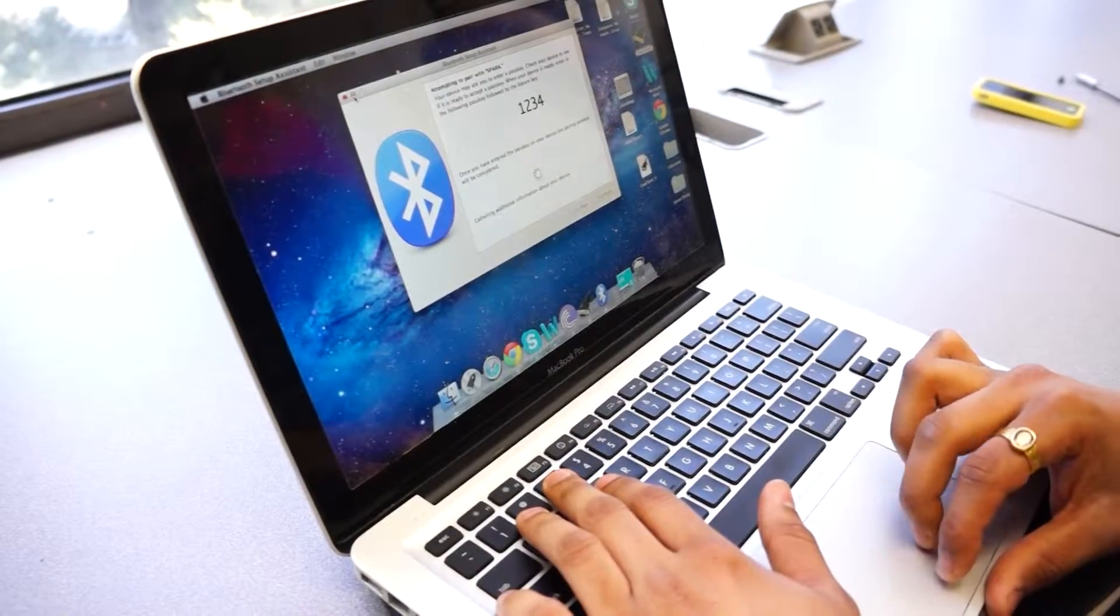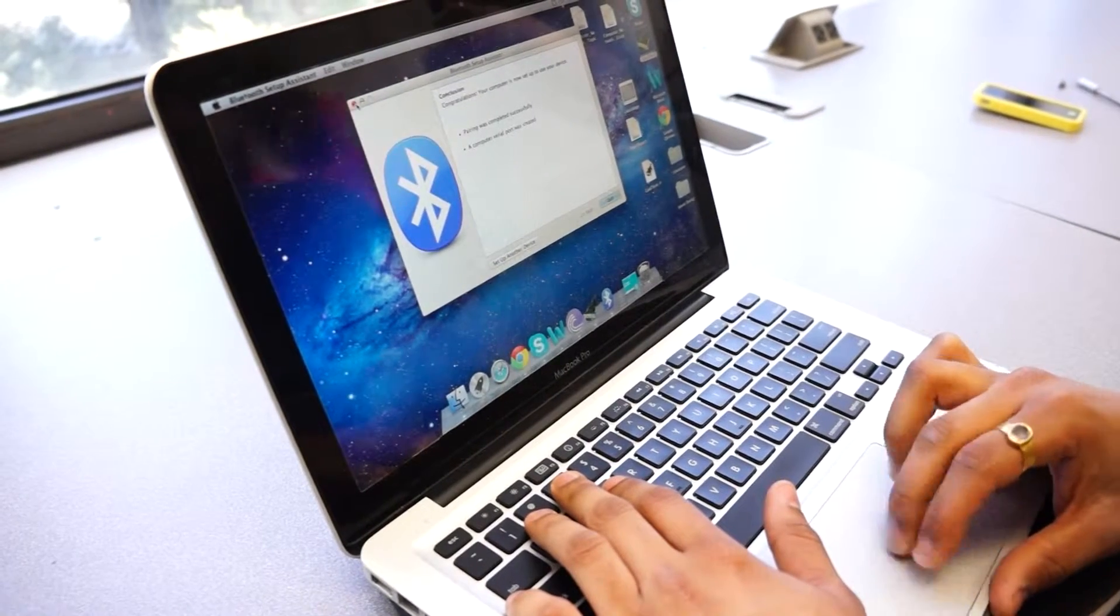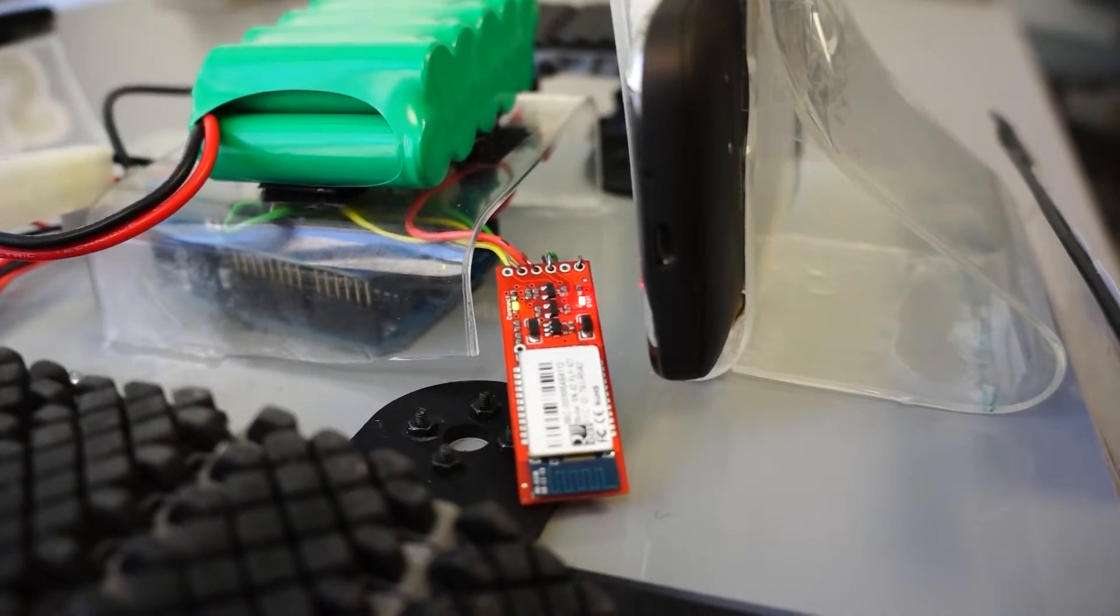We can control our robot by PC or smartphone with the connection of Bluetooth. You can see the connection when the light is green.